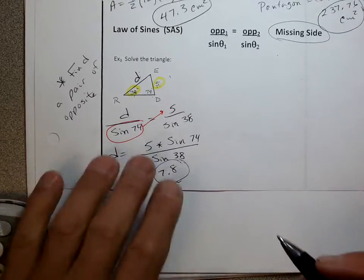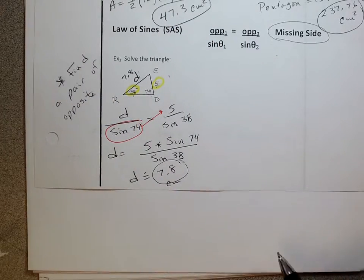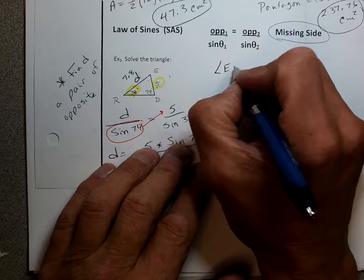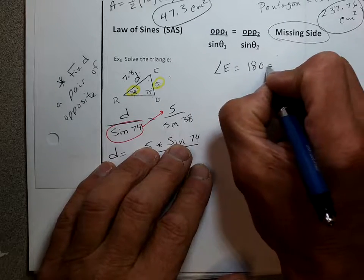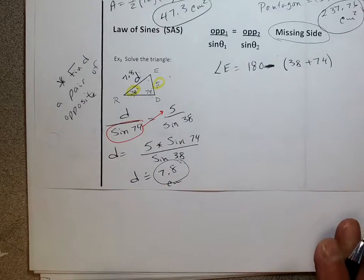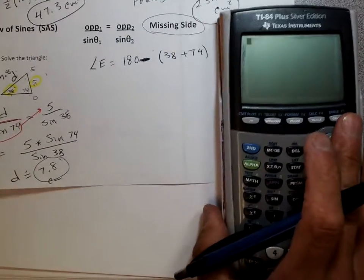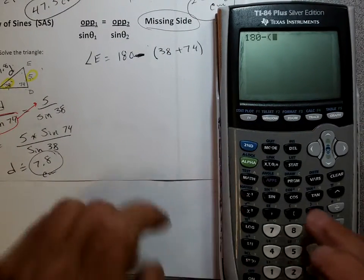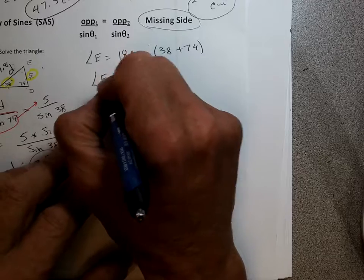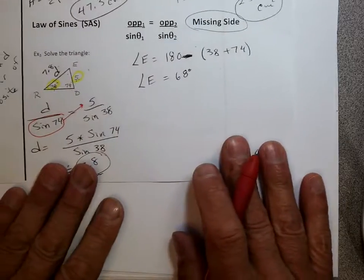Now, if we need to solve this triangle, I put in my 7.8. Then the next thing I would find is angle E. Angle E would be easy — I know there's 180 degrees in every triangle. So I go 180 minus (38 plus 74), and I get 68. So angle E is 68 degrees. I'm going to put that in my triangle.